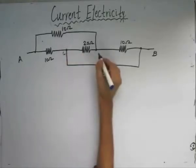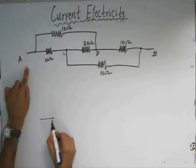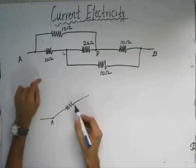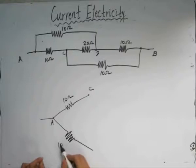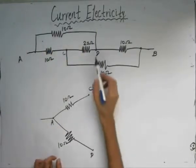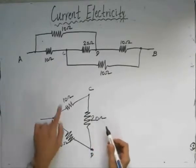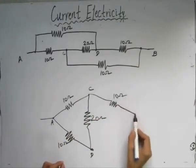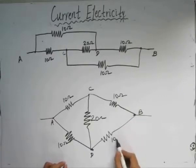Suppose we name this point as C and this point as D. If we redraw the circuit, we have point A. From A there are two branches: one going to C with a resistance of 10 ohms, and the other going to D with a resistance of 10 ohms. Between C and D there is a resistance of 20 ohms. Between C and B there is a resistor of 10 ohms, and between B and D there is a resistor of 10 ohms. So this is the pattern of a Wheatstone network.